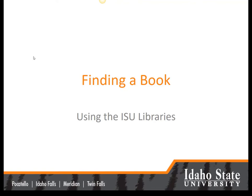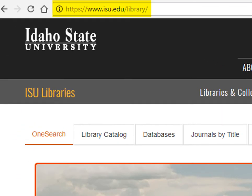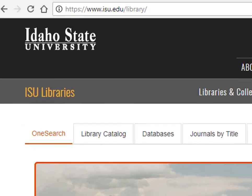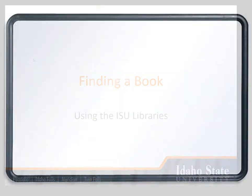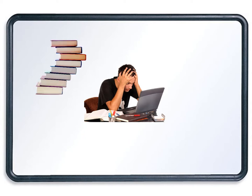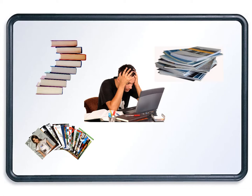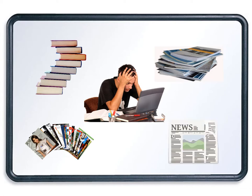This video is designed to help you know where you can go on the ISU Library's website to search for a book. In past semesters, some students have had difficulty distinguishing between different types of sources. Some databases include a mix of books, journal articles, magazine articles, newspaper articles, and other types of sources.